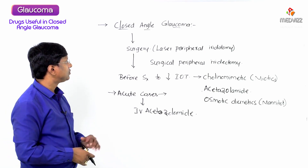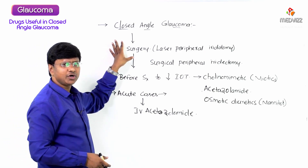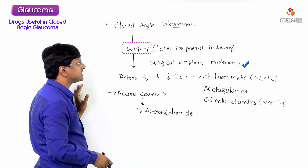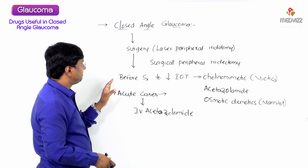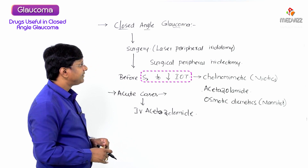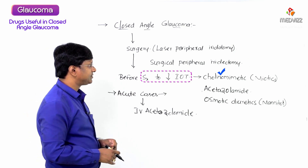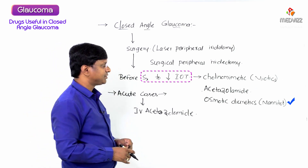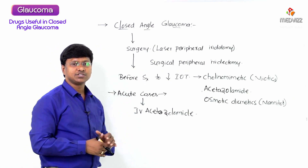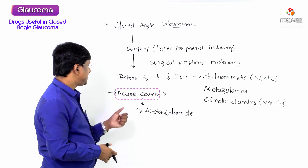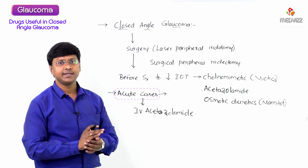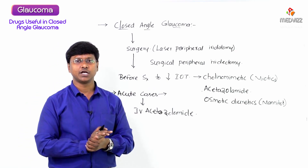To summarize the treatment of closed-angle glaucoma: the primary option is surgery — laser peripheral iridotomy or surgical peripheral iridectomy. Before surgery, intraocular tension is reduced using cholinomimetic drugs (miotics), acetazolamide, and osmotic diuretics. Other agents have too slow an onset of action. In acute cases, intravenous acetazolamide is given.